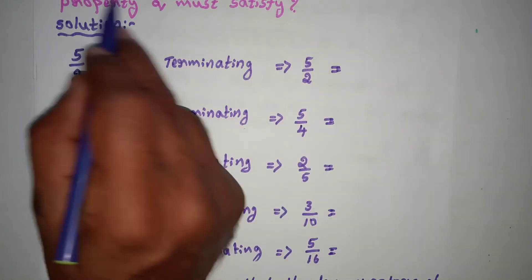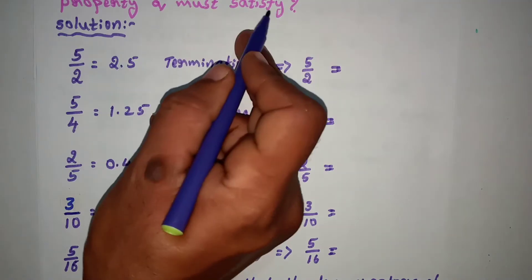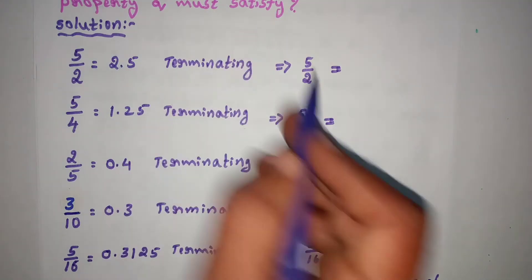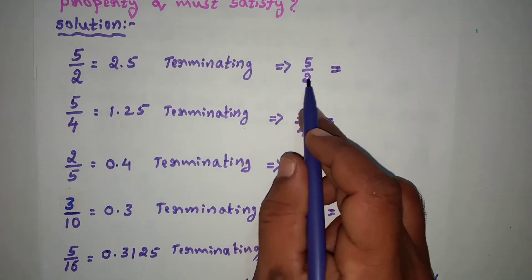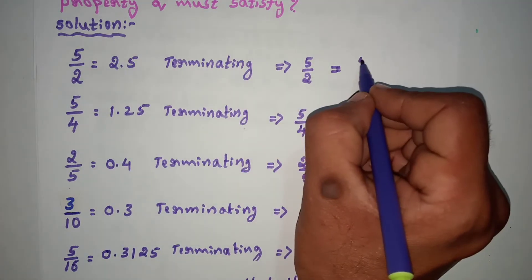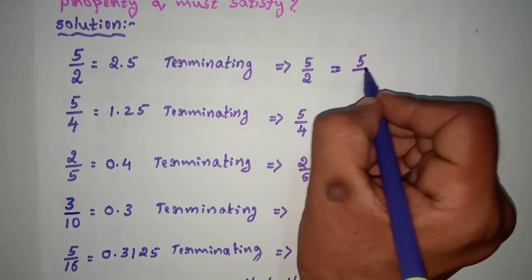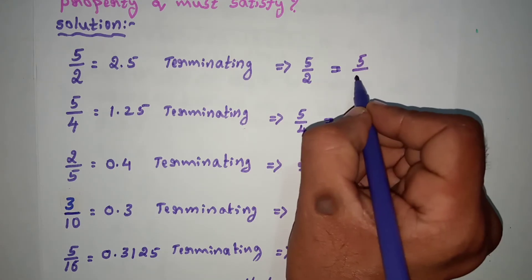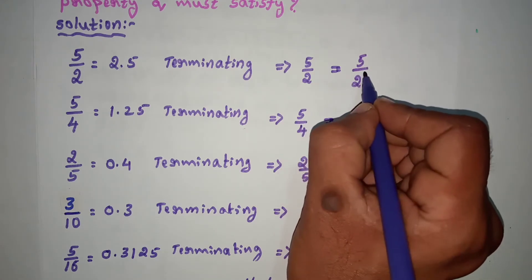The property Q must satisfy: the denominator Q can be expressed as a power of 2 — for example, 2 to the power 1, 2 squared, and so on. The denominator must be of the form 2 to the power m times 5 to the power n.